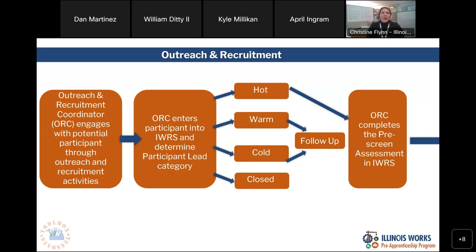We have four different lead categories. The vast majority of your leads when putting them into IWRS are going to be in the hot and warm stages. These are people that are really interested in the program — they want to move forward either with an application or they want to get more information. Your cold or closed leads are individuals who maybe you followed up with and they're not being responsive, or they've outright told you they do not want to move forward. Most often someone will start as a hot or warm lead and then drop into cold or closed. It's very rare we see cold or closed leads right from the start.